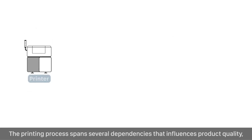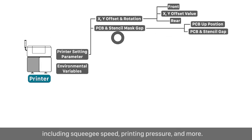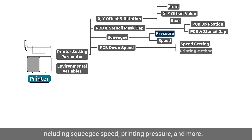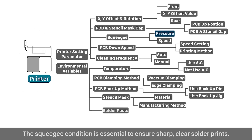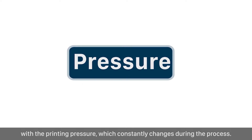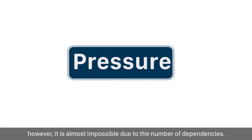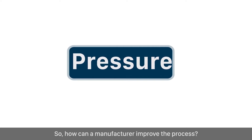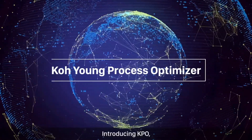Maintaining suitable printer conditions is a challenging task that requires a substantial amount of user experience and time. The printing process spans several dependencies that influence product quality, including squeegee speed, printing pressure, and more. The squeegee condition is essential to ensure sharp, clear solder prints. The squeegee speed has an especially close relationship with the printing pressure, which constantly changes during the process. A skilled engineer must monitor, identify, and control these parameters — however, it is almost impossible due to the number of dependencies.